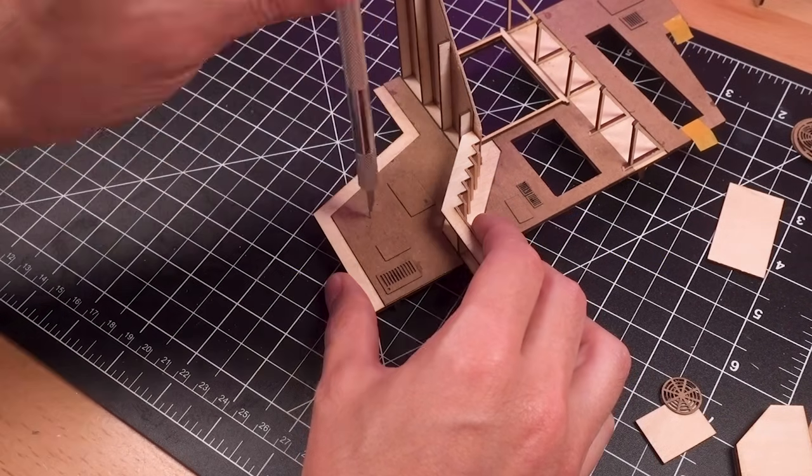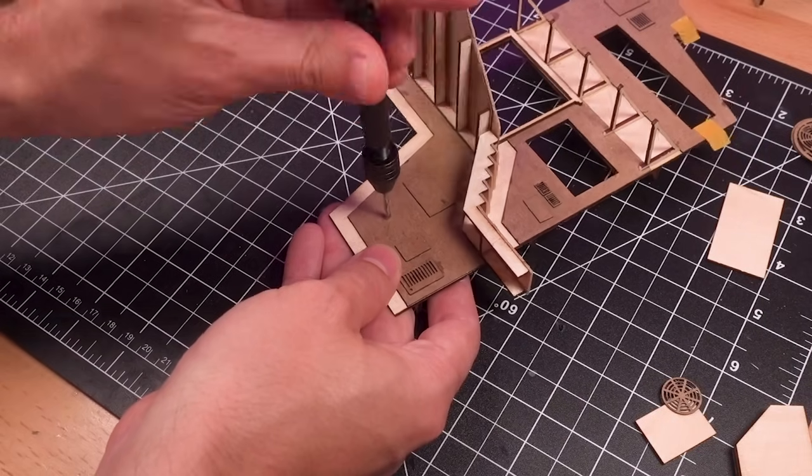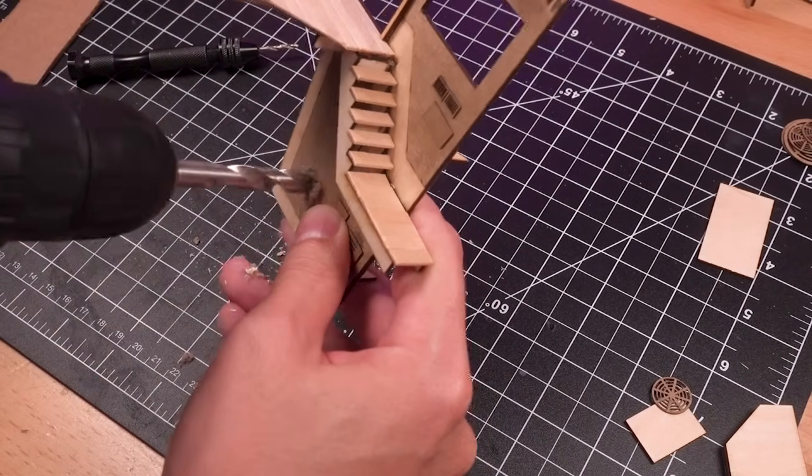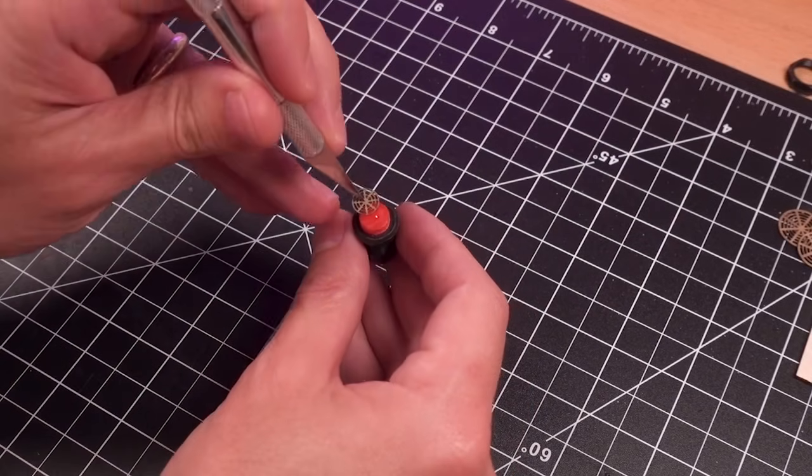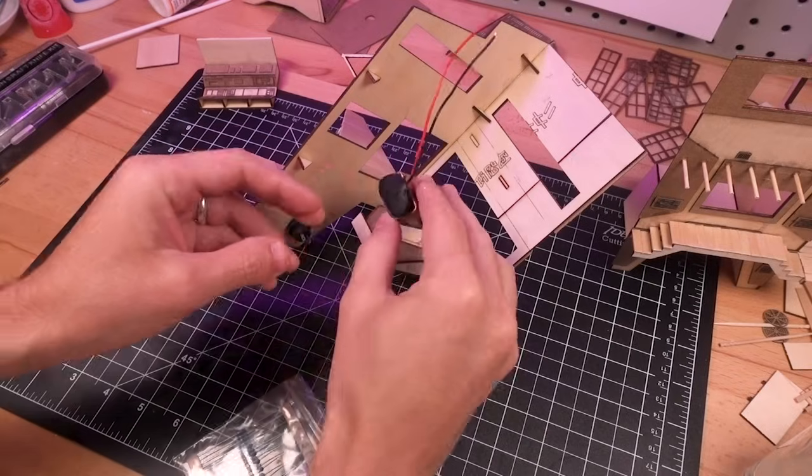Since I'd worked so hard to conceal the battery pack, I wanted an equally inconspicuous switch for the lights. To achieve this, I drilled a hole into one of the lower walls, then added a button switch with a tiny circular grating on top.